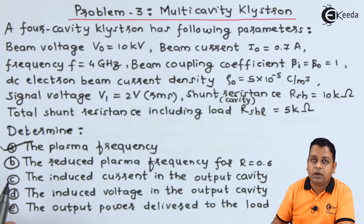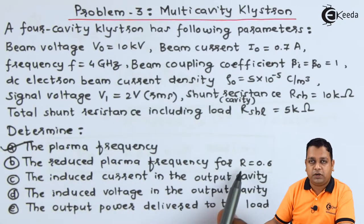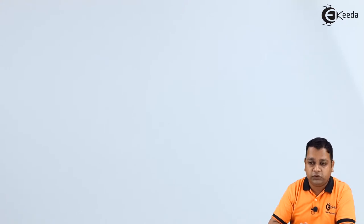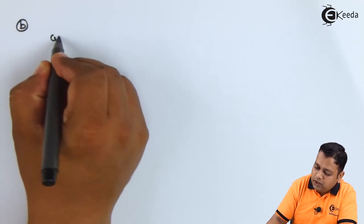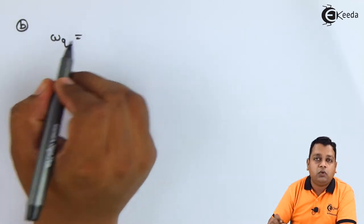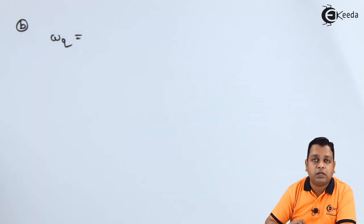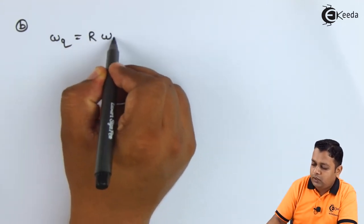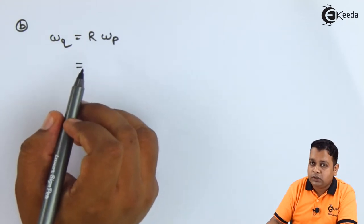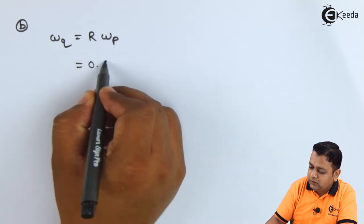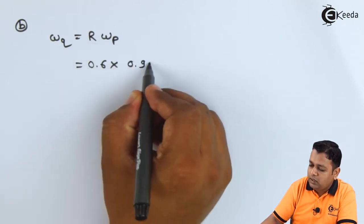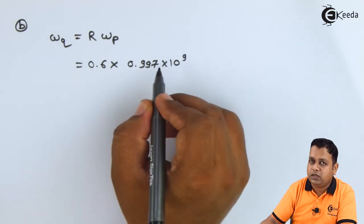The next task is to find the reduced plasma frequency when R is equal to 0.6. For the multi-cavity klystron, the reduced plasma frequency is denoted by ω_q. For part B, ω_q relates to the plasma frequency as: ω_q = R × ω_p. The R value from the problem statement is 0.6, and ω_p from the previous part is 0.997×10⁹ radians per second.